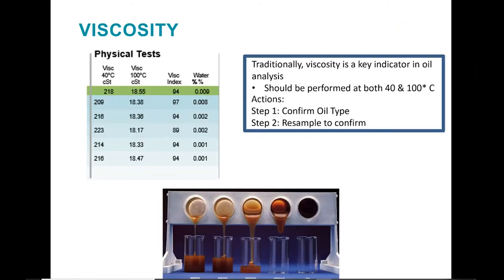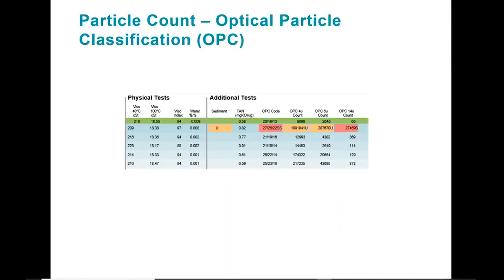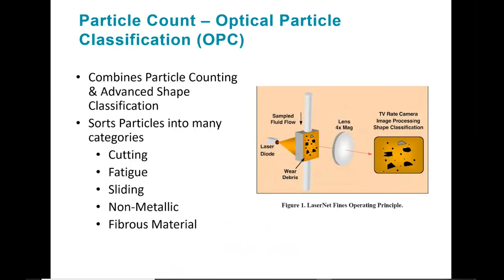When we expand our results, the optical particle classification, or OPC, tells a bigger story. ICP can only track particles up to 5 microns, but OPC is able to track bigger particles. Combining particle counting and classification, it can classify particles into their respective types of wear — think of it as almost like a mini-ferrography. By sorting particles into the following families — cutting, fatigue, sliding, non-metallic, and fiber — the OPC can determine the source of the contamination.